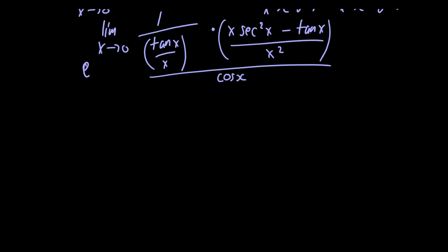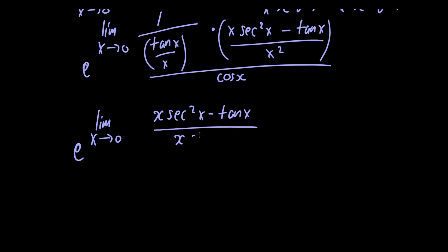Simplifying this expression gives us e raised to the limit as x approaches 0 of x multiplied by secant squared of x minus tangent of x, divided by x multiplied by sine of x. Now if we let x tend to 0 in the numerator we get 0, since secant squared of 0 is 1 and tangent of 0 is 0. In the denominator we also get 0. So the limit is of the form 0 over 0 again, and we're going to have to apply L'Hôpital's rule again.